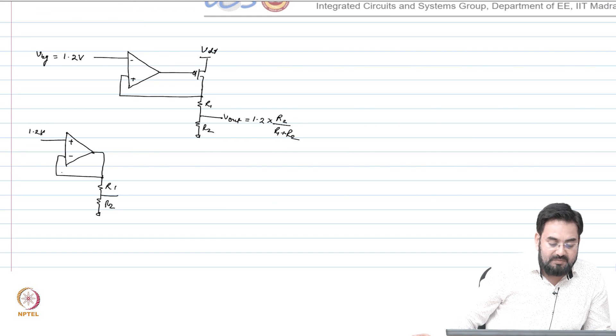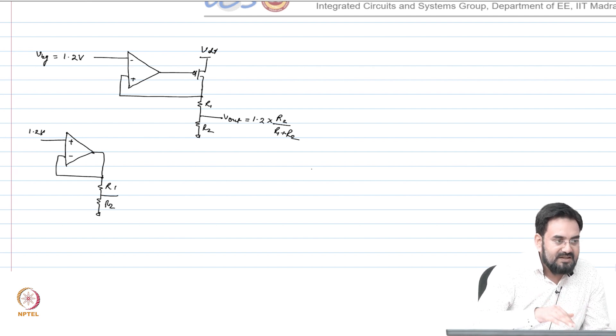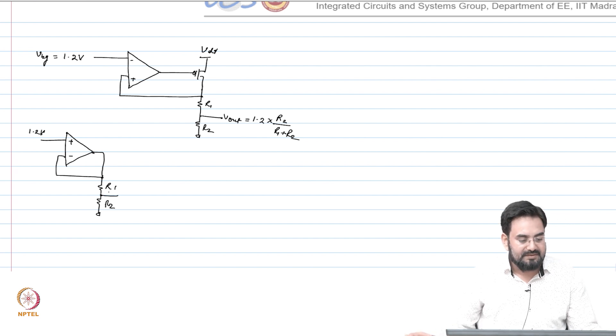If you want multiple bandgap voltage references, in some cases we require this. Let's say you need 1.2 volt, 0.4 volt, 0.5 volt, all those values, you can just tap 1.2 volt and use the buffer resistor divider and tap multiple voltages. As long as the temperature coefficient of these resistors you are using are same, it will not affect your bandgap curve, it will only scale up or down depending upon the values you choose.